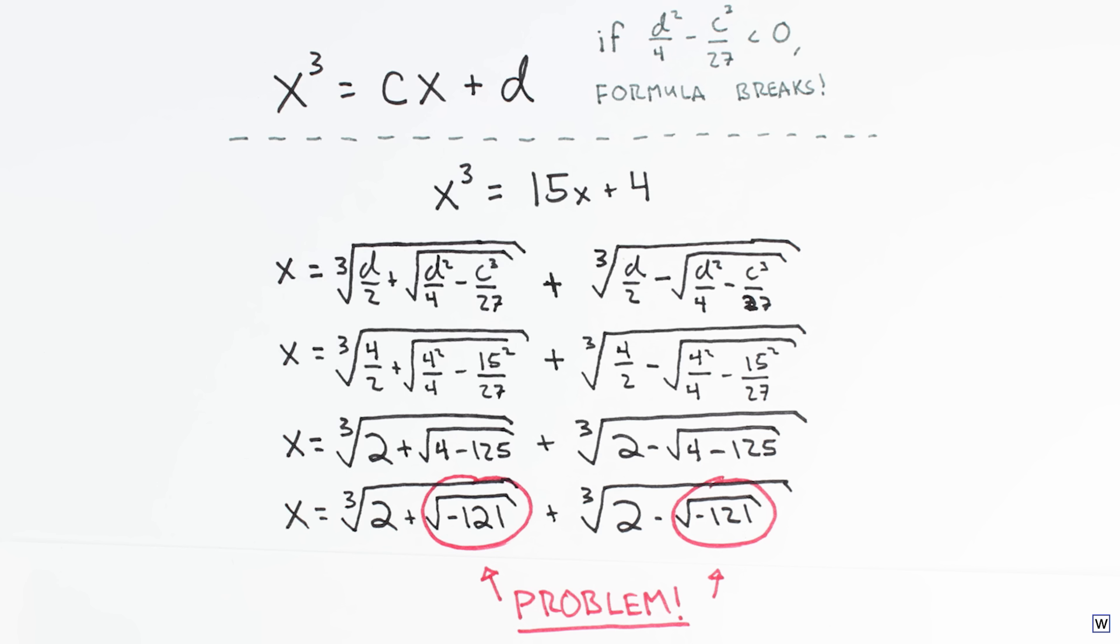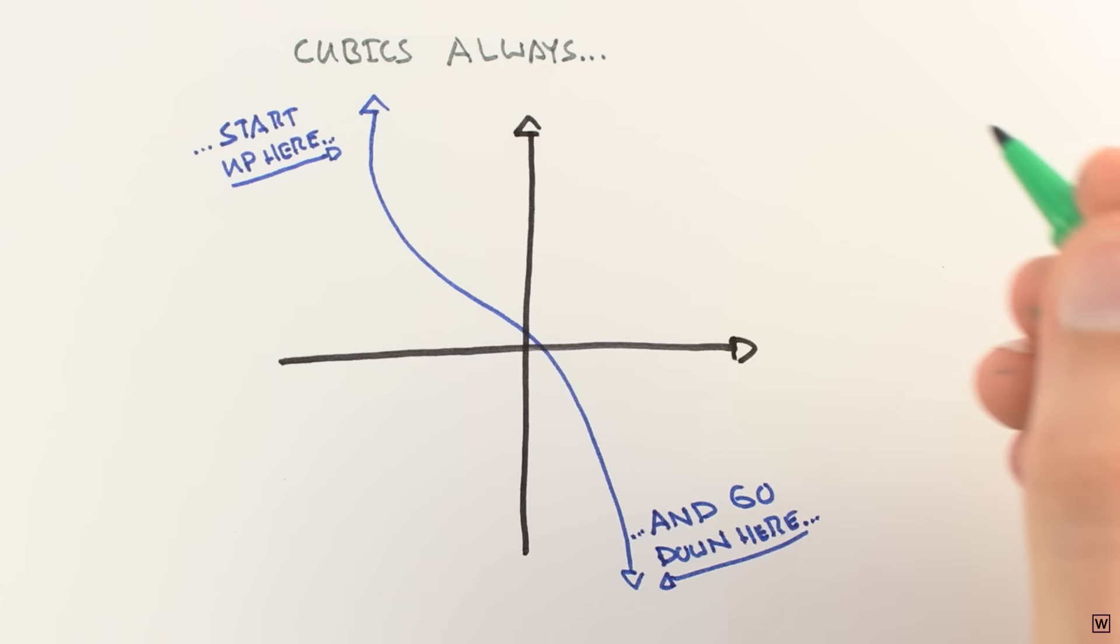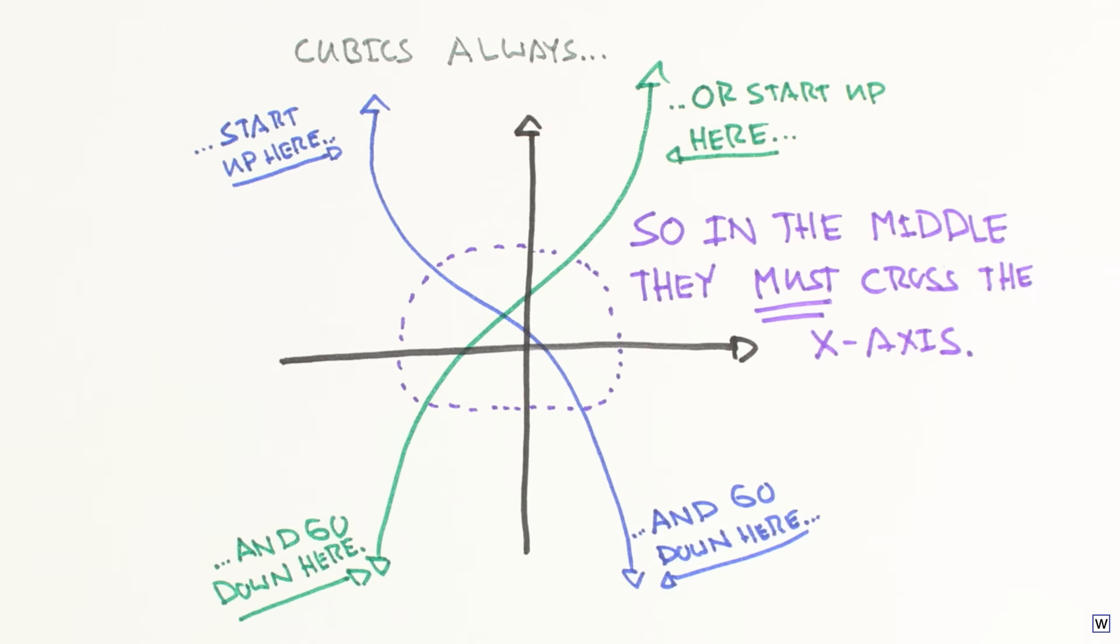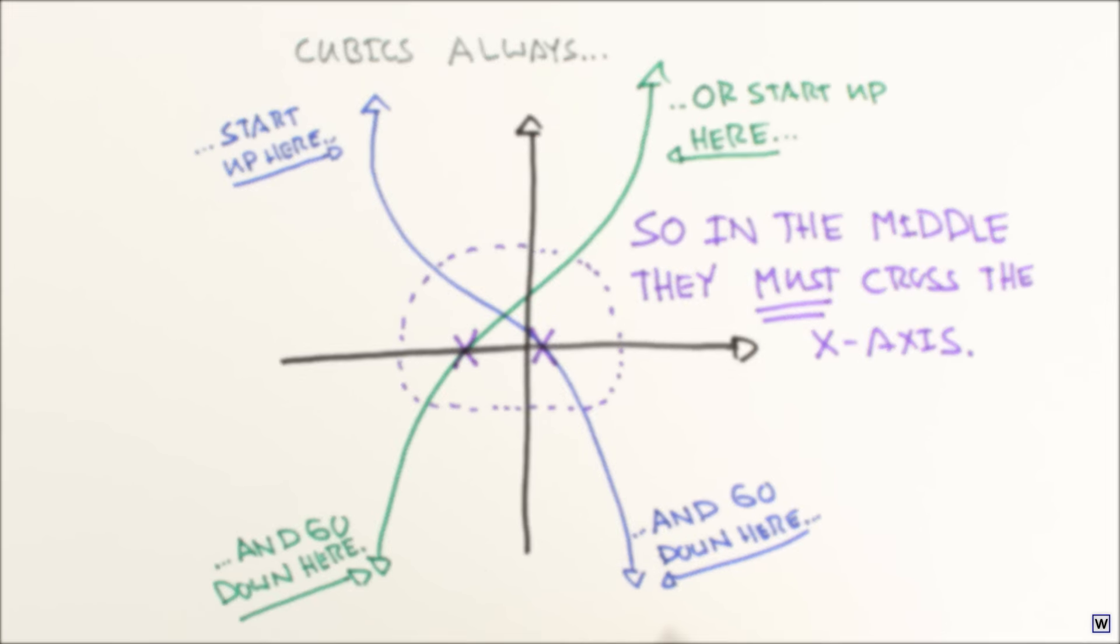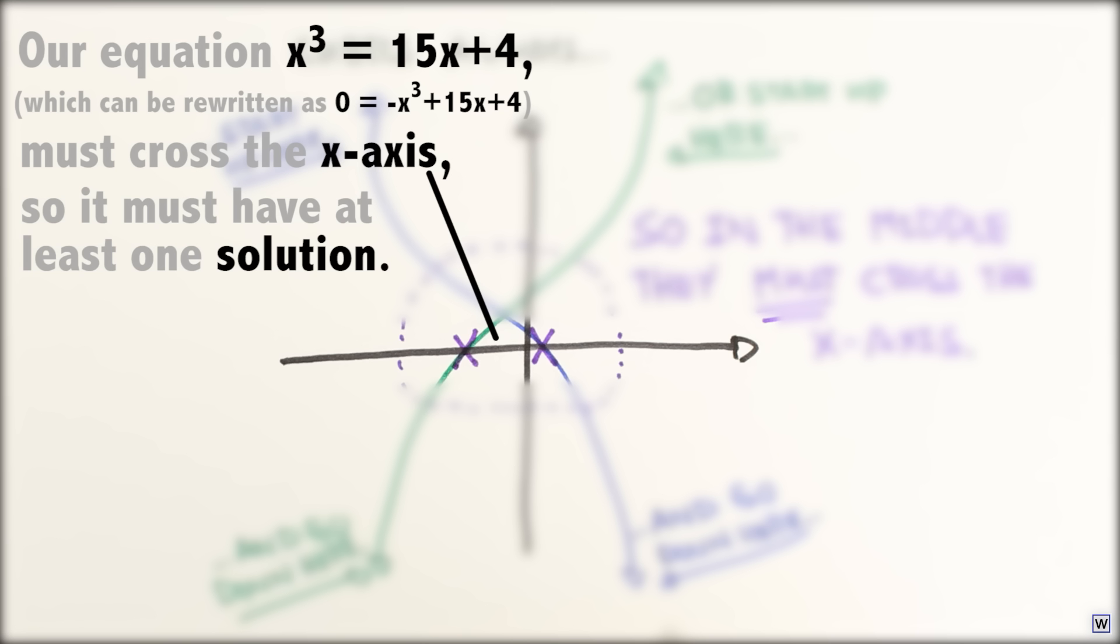However, in this case we know there is at least one solution because of the way cubics are shaped. Regardless of their coefficients, cubic functions will always cross the x-axis at least once, meaning that our equation, x cubed equals 15x plus 4, will have at least one real solution.